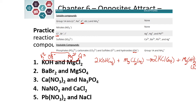Let's try barium bromide and magnesium sulfate. Barium is in column 2, but bromide is usually soluble and barium is not an exception, so barium bromide is an aqueous solution. For magnesium sulfate, sulfates are usually soluble and magnesium is not an exception, so this is also an aqueous solution.